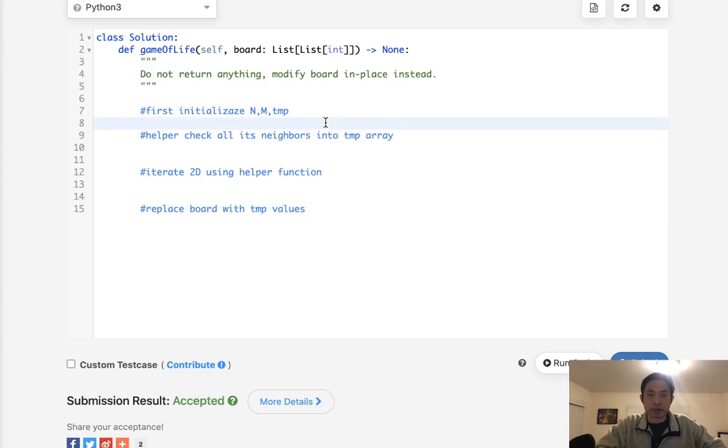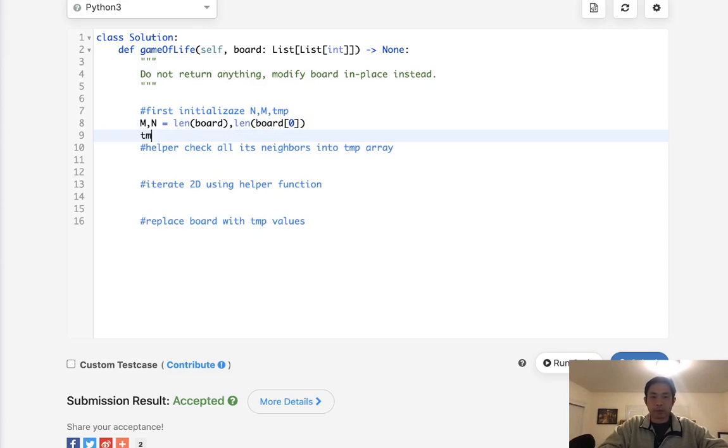So the path that I'm going to go here is what we'll do is first initialize some variables, like the number of rows and columns and stuff, as well as our temporary array. So let's start with initializing some variables here. We'll start with our n, say m, n. And this will just be the length of board, as well as the length of the first array inside the board.